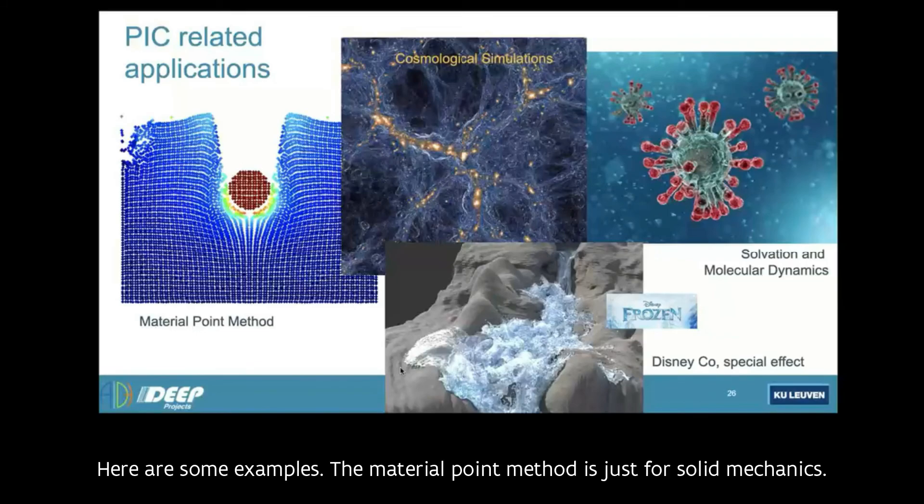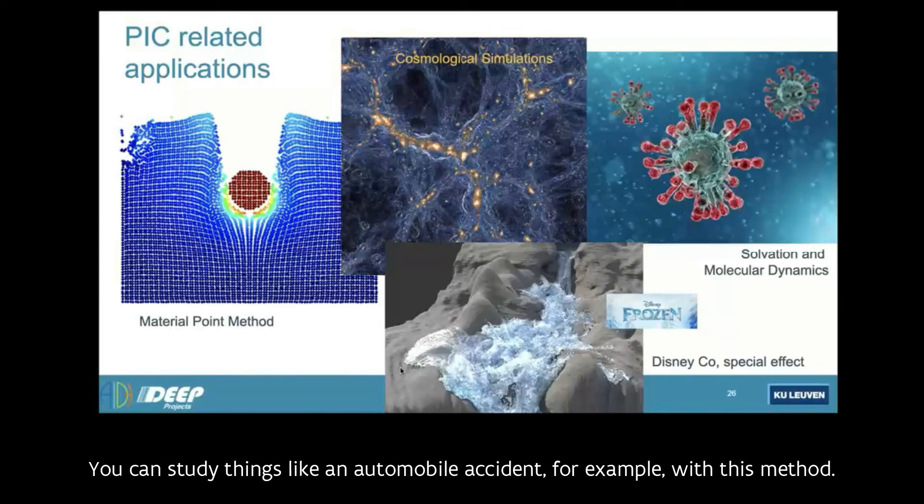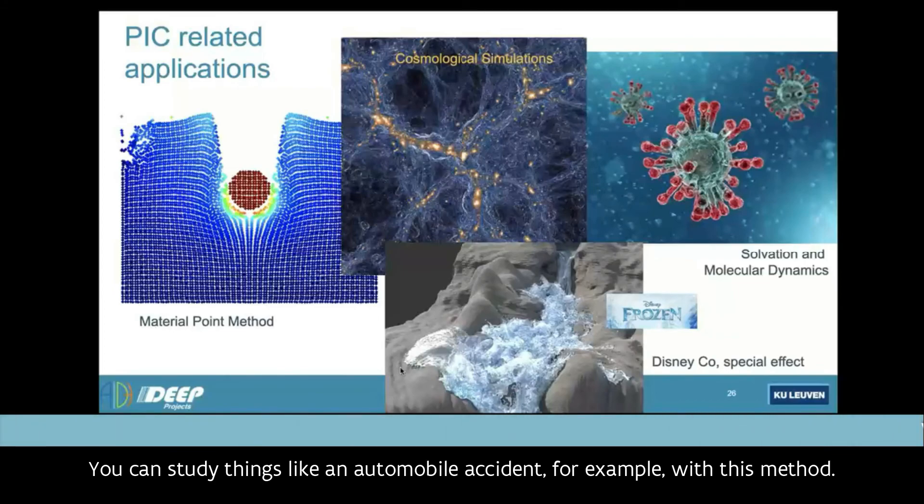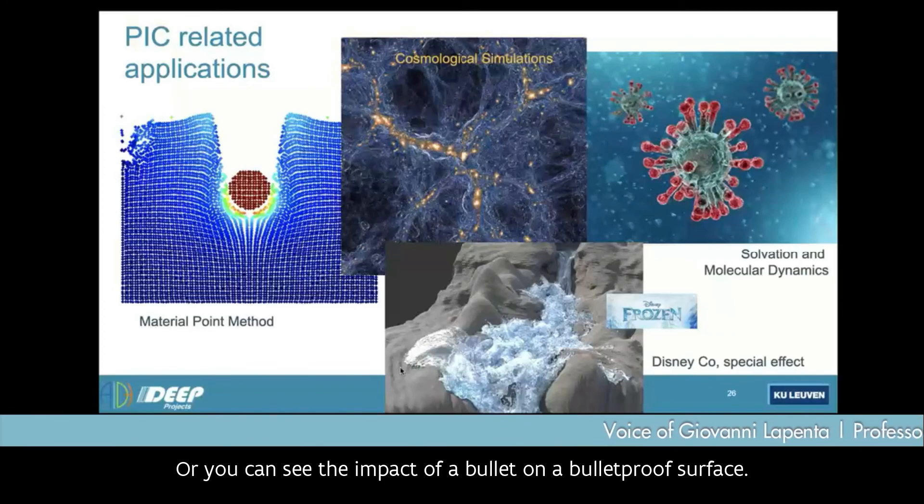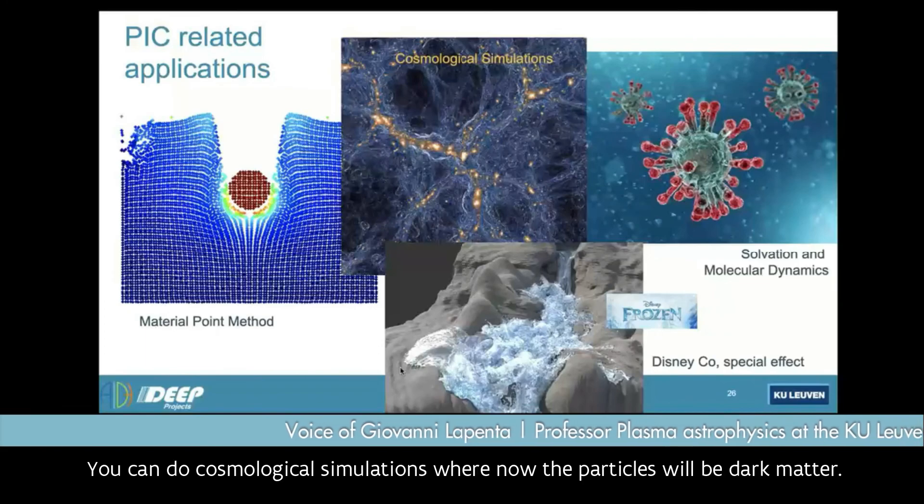Variants of the particle in cell method, or systems where you have to deal with particles and with a field computed on a grid include many other cases. Here are some examples. The material point method is for solid mechanics. You can study things like an automobile accident, for example, with this method, or you can see the impact of a bullet on a bulletproof surface.